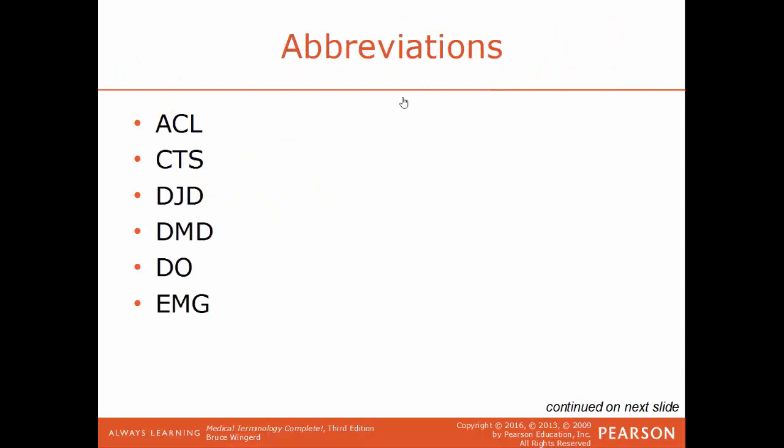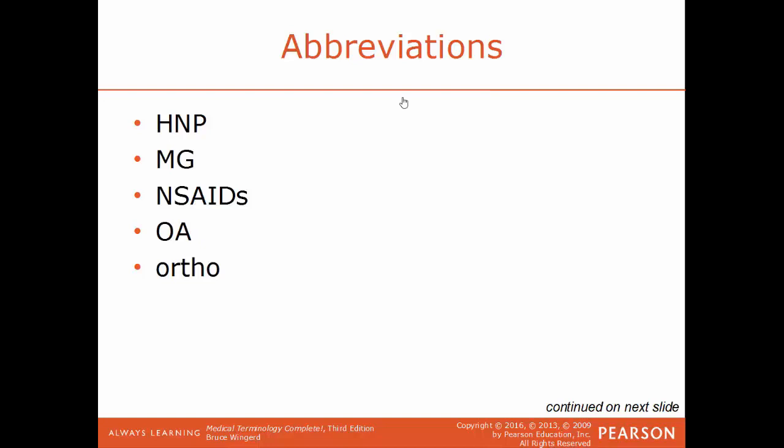Common abbreviations: ACL is the anterior cruciate ligament, commonly torn in sports injuries. CTS is carpal tunnel syndrome. DJD is degenerative joint disease. DMD is Duchenne muscular dystrophy. DO is doctor of osteopathic medicine, as opposed to MD for medical doctor — both are doctors but with different training. EMG is electromyography, recording electrical activity of muscles. HNP refers to a herniated disc — herniated nucleus pulposus. NSAIDs are non-steroidal anti-inflammatory drugs like aspirin, ibuprofen, and Aleve.